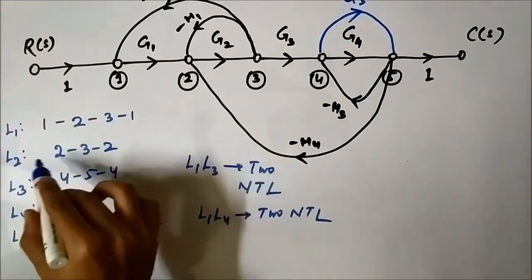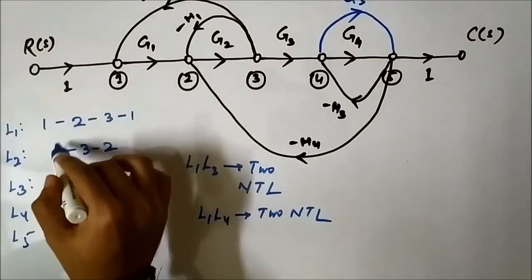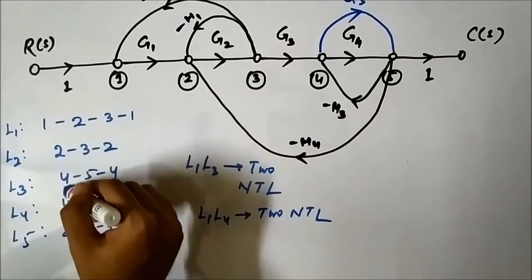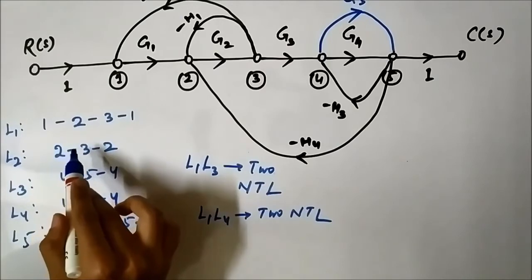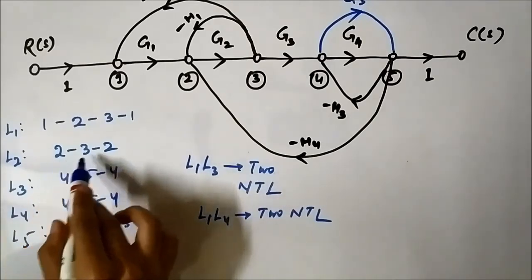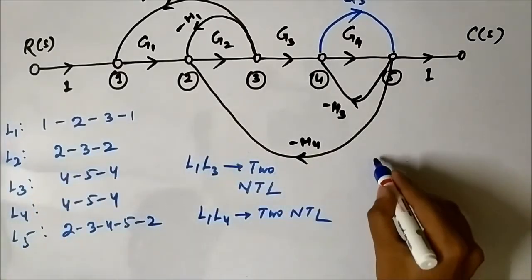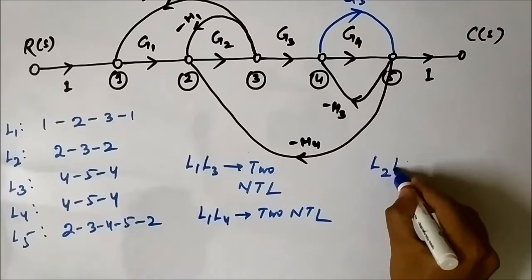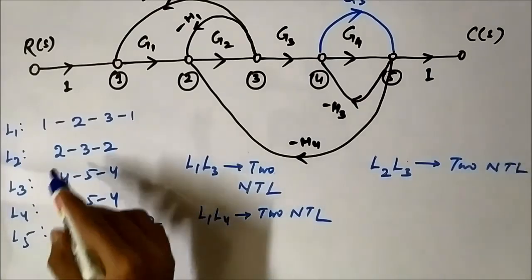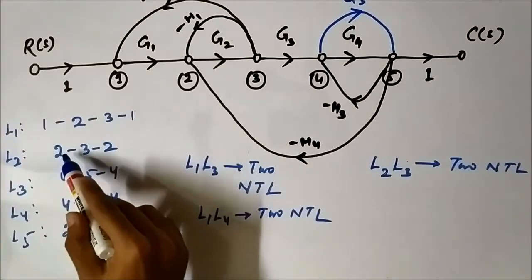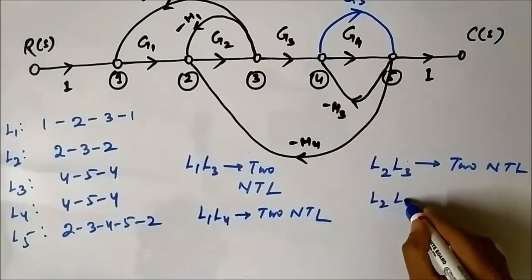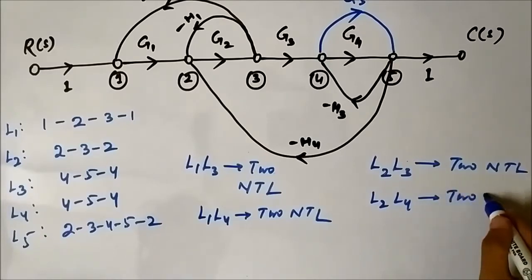We have already compared L2 and L1 — they are touching with nodes 2 and 3 in common. Comparing L2 (2,3,2) with L3 (4,5,4): no common node, so L2 and L3 are two non-touching loops. Comparing L2 (2,3,2) with L4 (4,5,4): again no common node, so L2 and L4 are two non-touching loops.